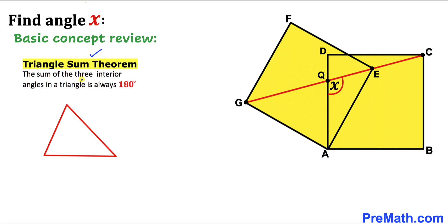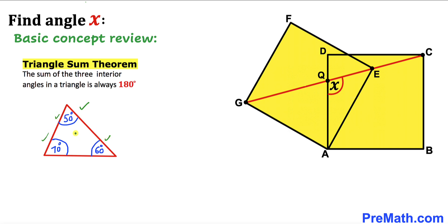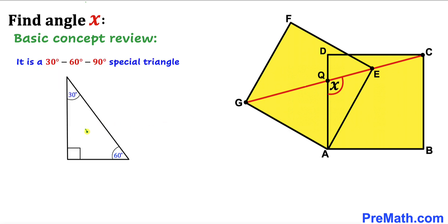Now let's recall the triangle sum theorem: the sum of the three interior angles in a triangle is always 180 degrees. In other words, the sum of all three interior angles must equal 180 degrees. Here's an example showing all three interior angles adding up to 180 degrees.